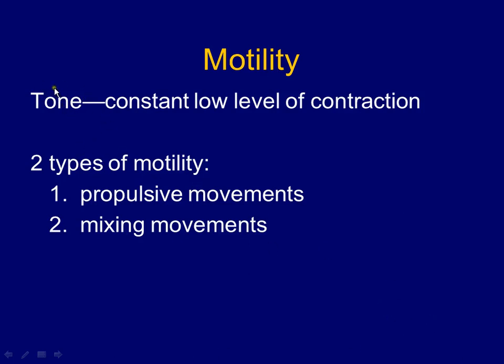Smooth muscle maintains tone — a small level of contraction all the time. When you die, your GI tract actually lengthens a couple of feet because it's the first time it can fully relax. The two types of motility are propulsive — moving food forward from mouth to esophagus to stomach to small intestine, large intestine, rectum, and anus — and mixing, which grinds, smashes, or wrings food to absorb water out of it.